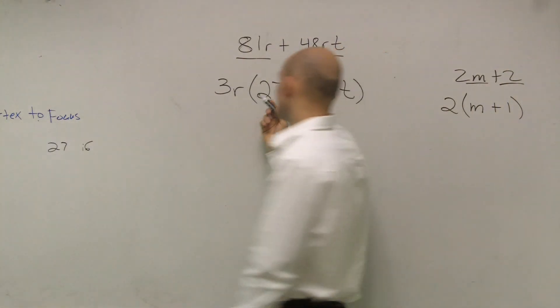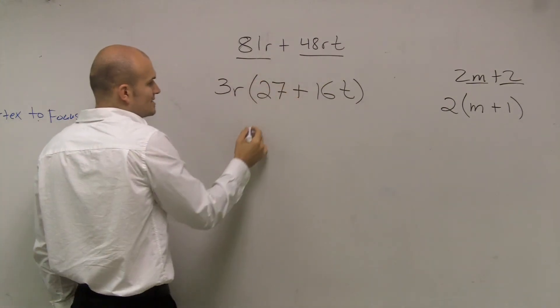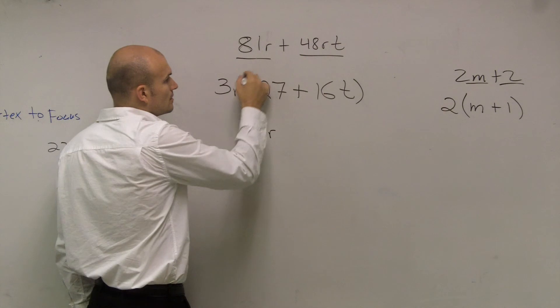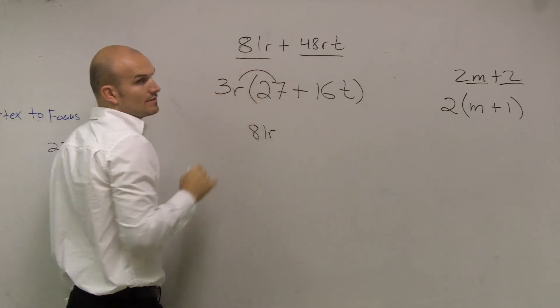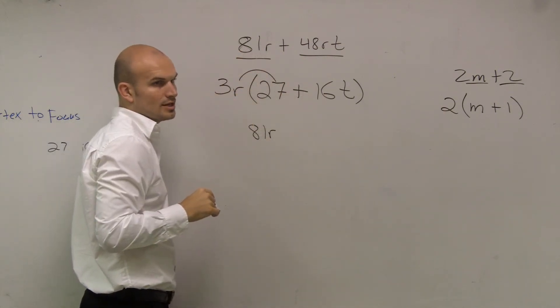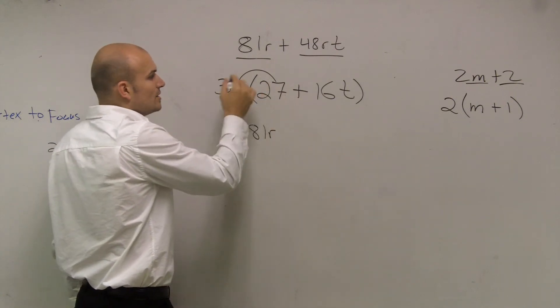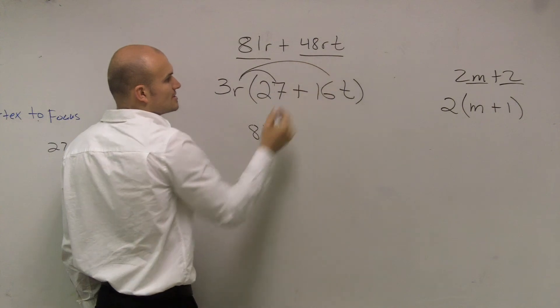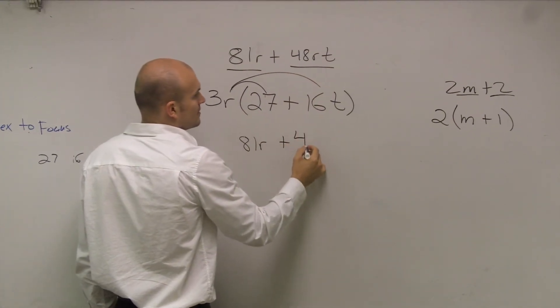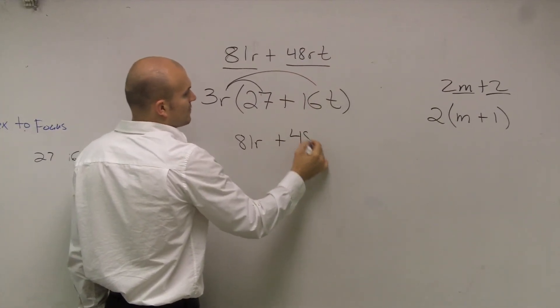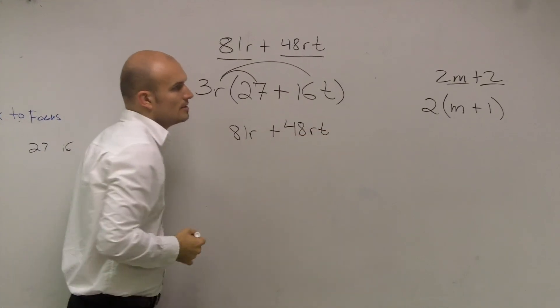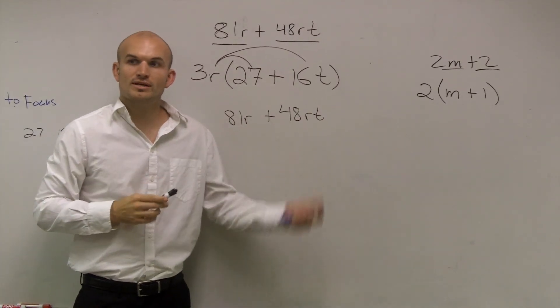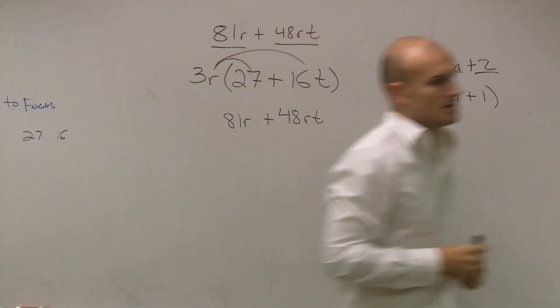So let's do that. 3r times 27 is going to give you 81r. 81 divided by 3 is 27. Check it. So if I go back, 3 times 27r is going to be 81, and then 3r times 16t gives me 48rt. So we're just working backwards. You work forward to get it as a product, and then you break it back out of the part.